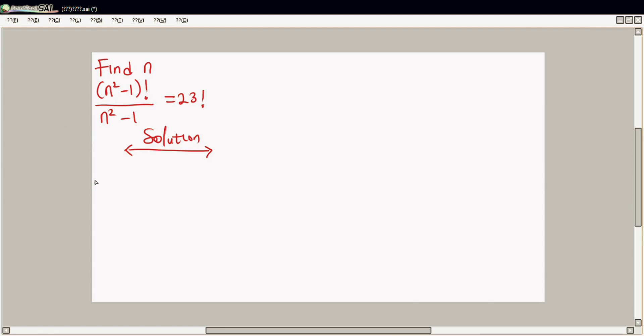Okay, let's start. First of all, let n² minus 1 equal to k. Then that would be k factorial over k equal to 23 factorial.